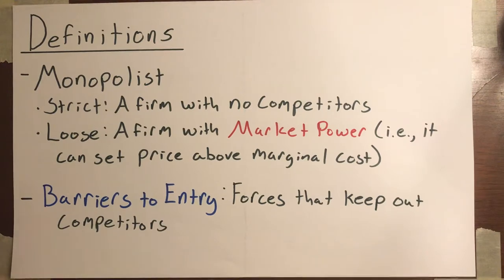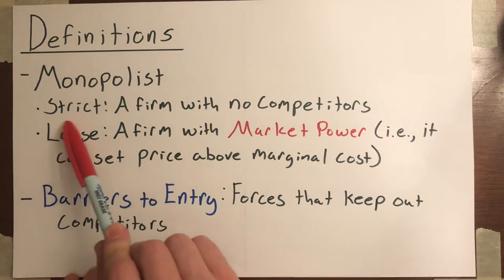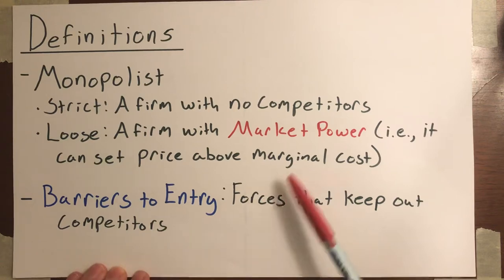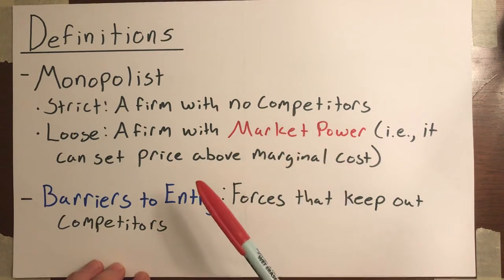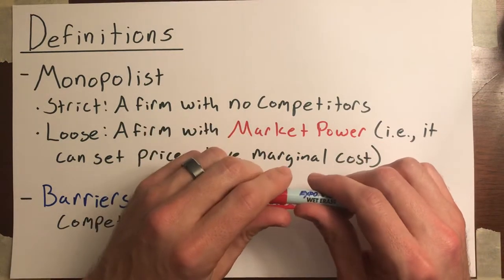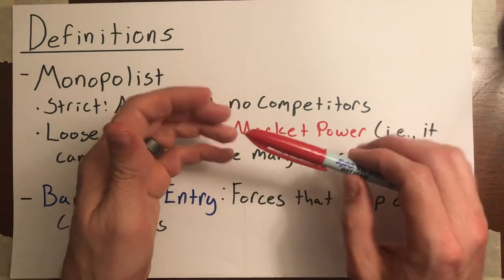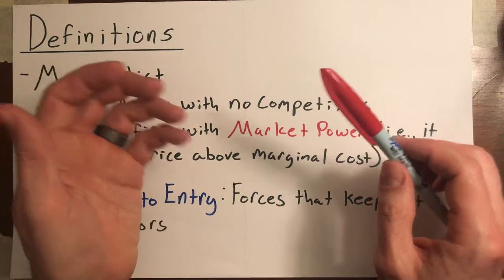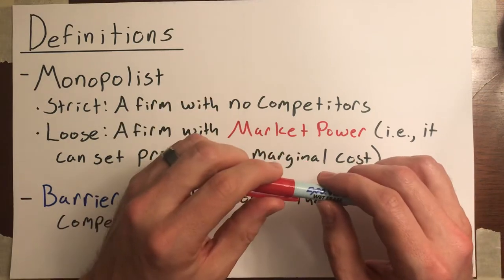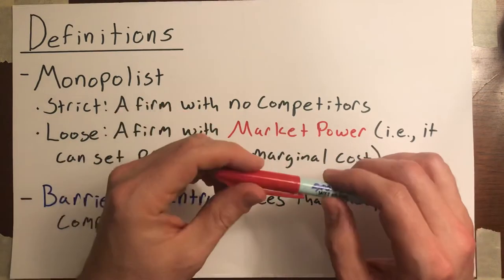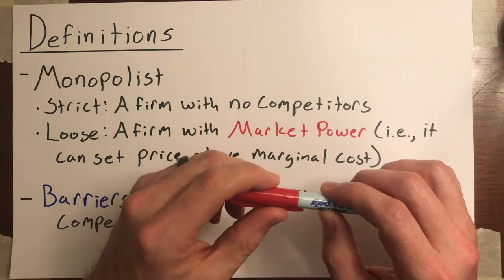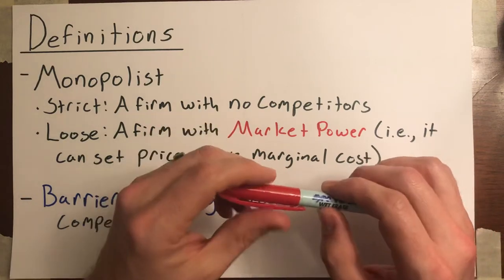Let's start by going over a few definitions. What is a monopolist? The strict definition of a monopolist is a firm that has no competitors — you're the only seller in that market. But this isn't particularly useful. You can have markets like PC operating systems where Microsoft is not the only firm selling operating systems, but it's by far the largest. In the late 1990s, they were selling about 95% of operating systems. There was Linux, there was Apple, but for the most part Microsoft was running the show.